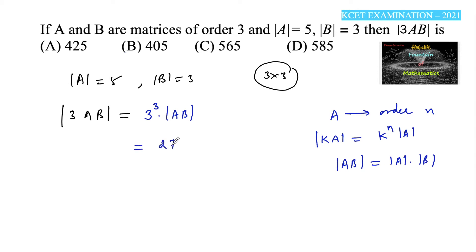So we can write 3 to the power of 3, that is 27, times the determinant of A times the determinant of B, which is 27 times 5 times 3.